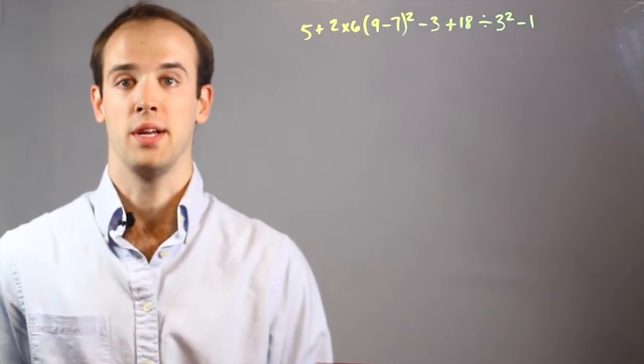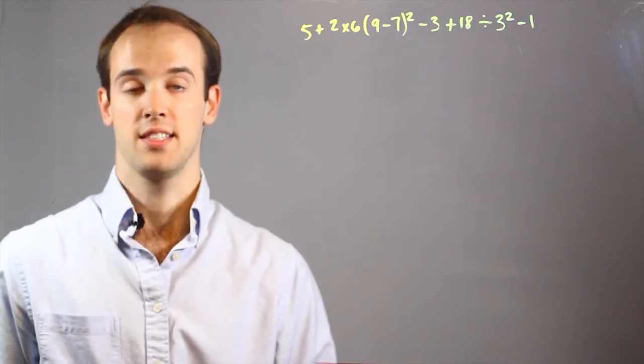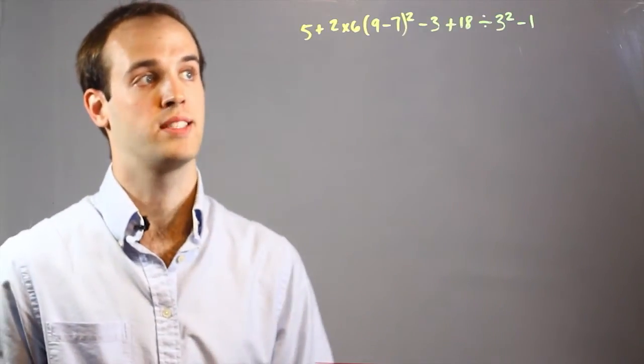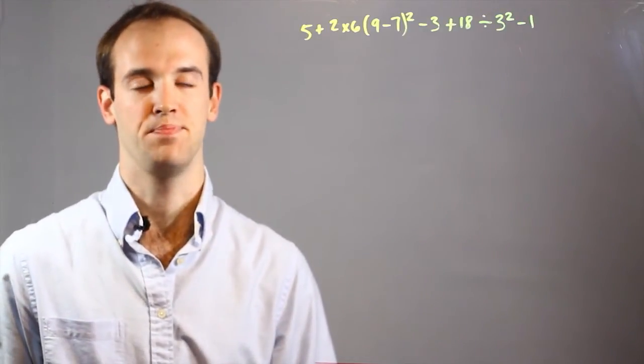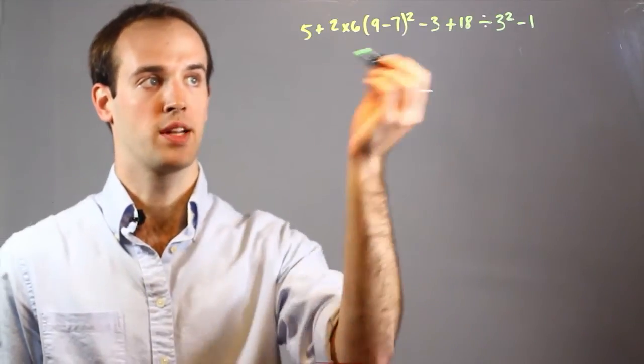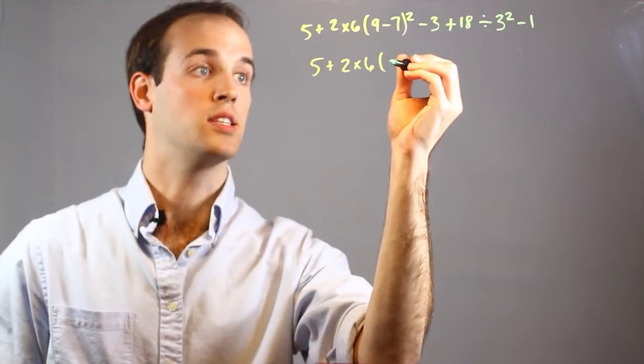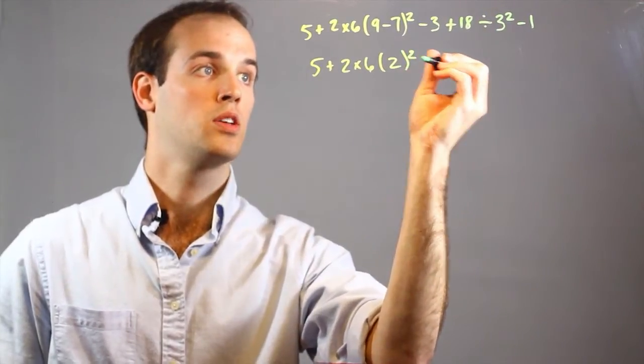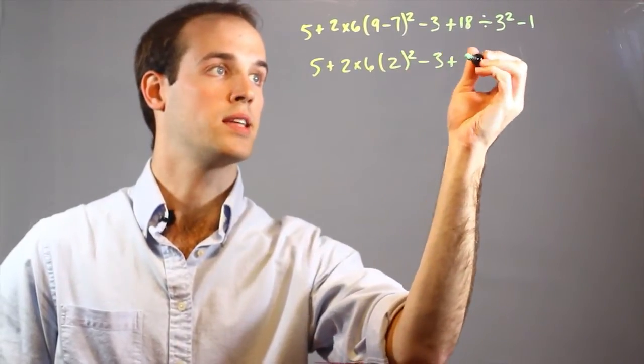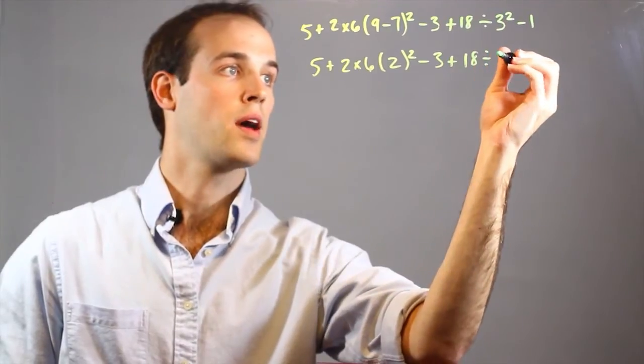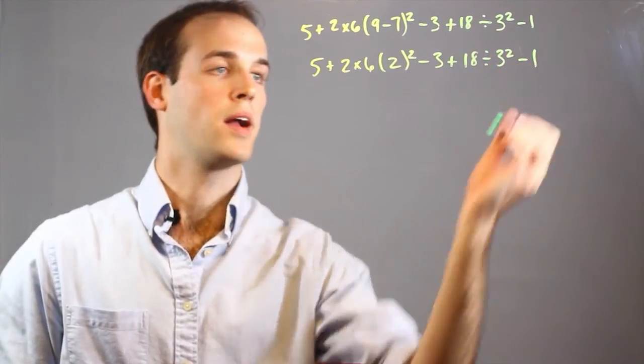So the first step would be to simplify everything within parentheses, and you can see I have one set right here, which is 9 minus 7. So on the next line, I'm going to simplify that. I'm going to do 5 plus 2 times 6, parentheses 2, squared, minus 3, plus 18, divided by 3 squared, minus 1.